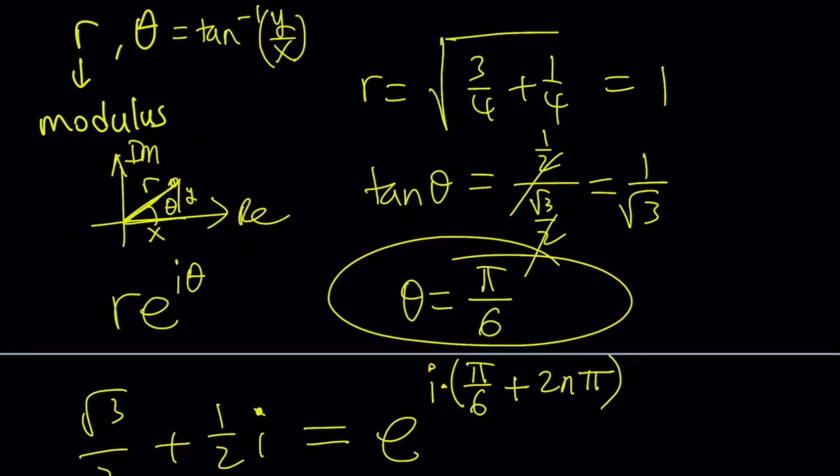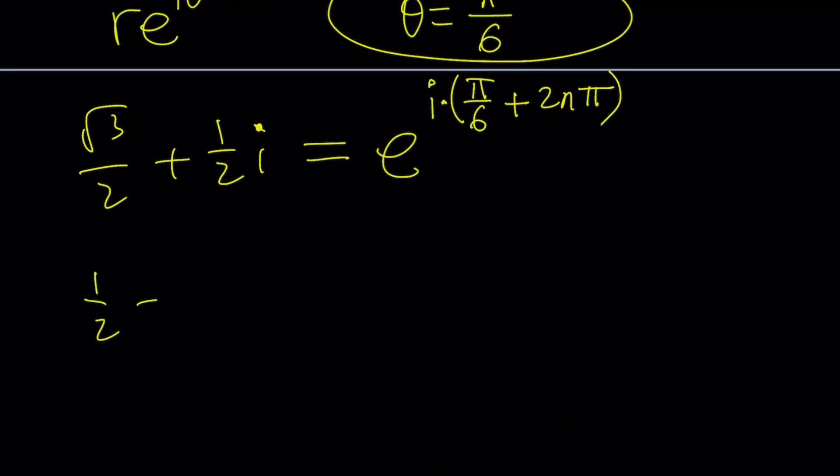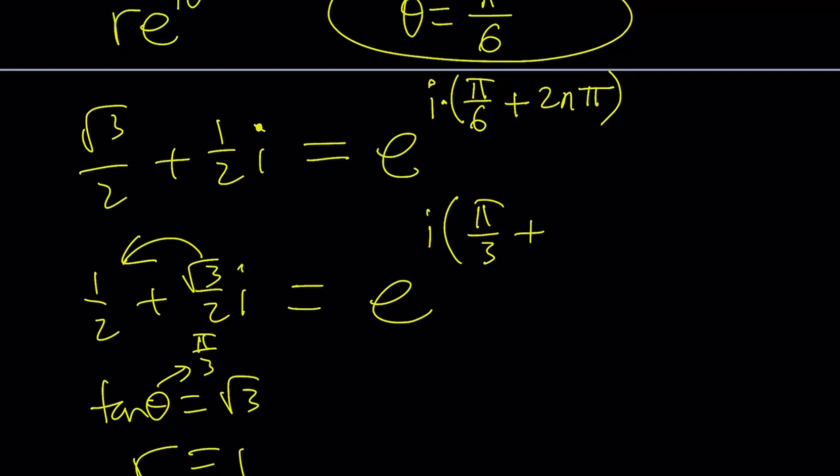Let's go ahead and do the same thing for the second one, 1/2 + √3/2i. Now, what happens when the x and y kind of switch places? You're going to get a tangent of √3. And r is going to be 1 again because we're dealing with the same numbers. And this time, it's going to be 60 degrees or π/3 radians. So this number can be written as e^(i·π/3). And you've got to be careful. You don't have to have the same integer. It could be a different integer that gives you different branches. So they have to be independent of each other because these are different numbers. So I'm going to use 2kπ for that.